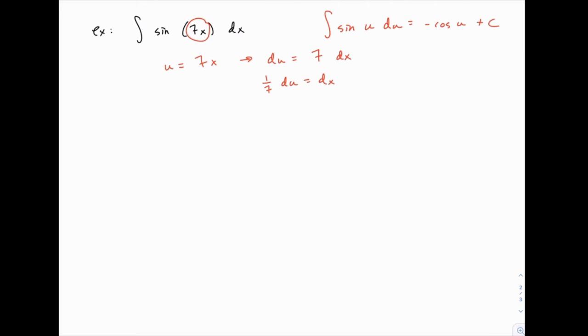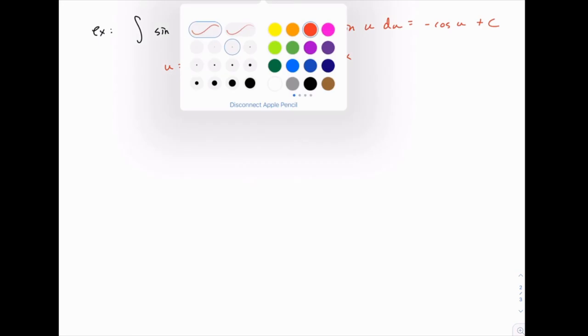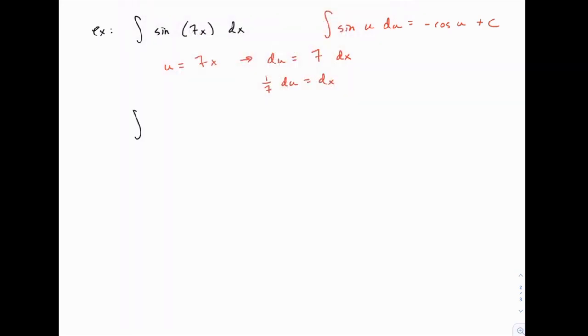What that looks like is when we've substituted, we end up with sine of u, and then dx gets replaced with 1/7. I'll put that in front just to keep things in a familiar form, and then du.